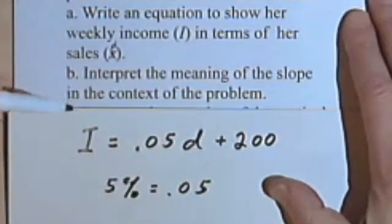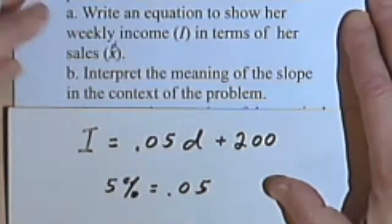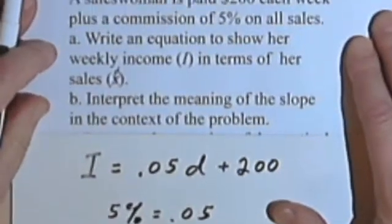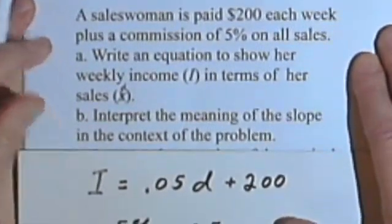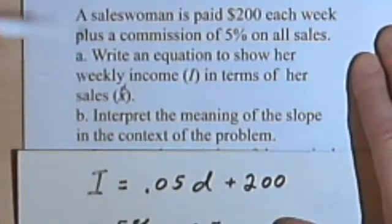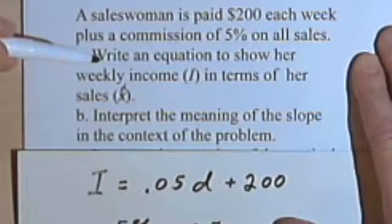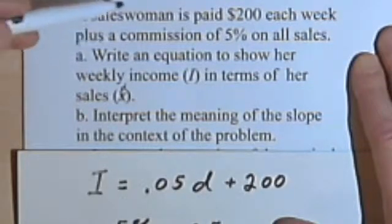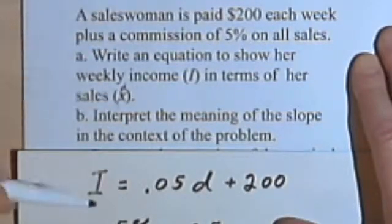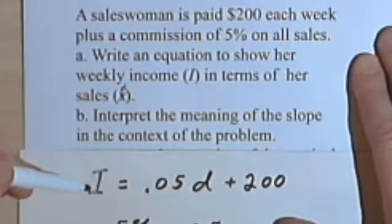Then it says interpret the meaning of the slope in the context of the problem. Let's see if we can do this without a graph. Because for the most part with problems like this, if you understand the problem well enough, you may be able to get it all just from reading the problem through, and perhaps also making out an equation.